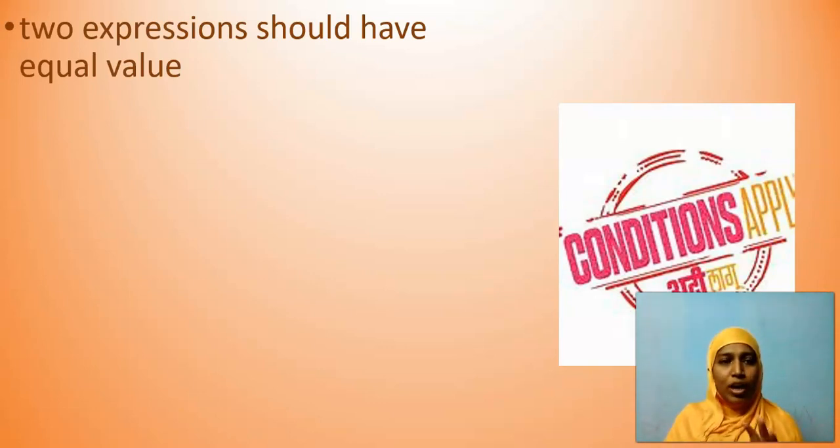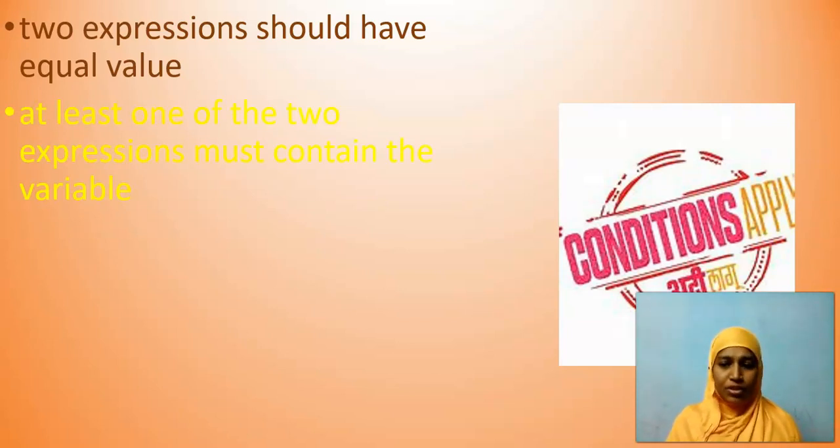Two expressions should have equal value. Both the left hand side and the right hand side should be well balanced. It should be equal. At least one of the two expressions must contain the variable. There should be a variable. Without a variable, we cannot have an equation. So 8 minus 3 is equal to 5. Is it an equation? Of course, by the definition, it is not an equation.